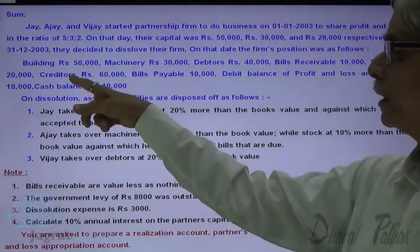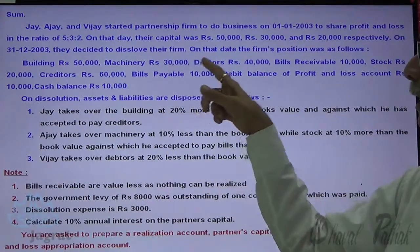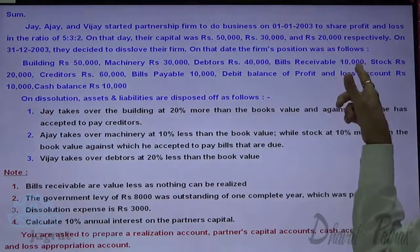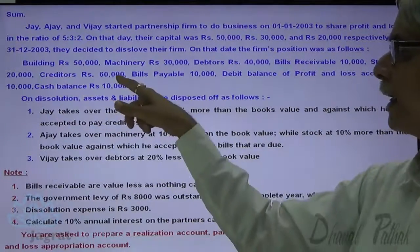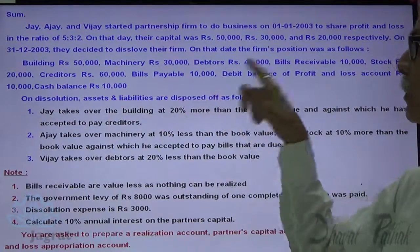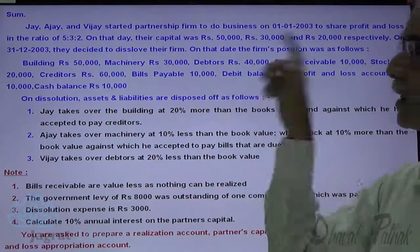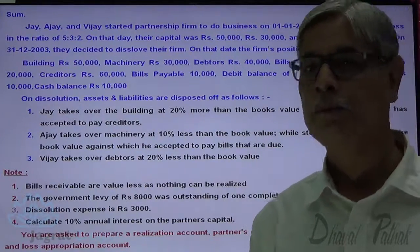At the end of the year: building 50,000, machinery 30,000, debtors 40,000, bills receivable 10,000, stock 20,000, creditors 60,000, bills payable 10,000. These are the assets and liabilities information given to you.